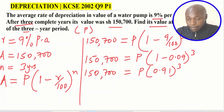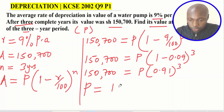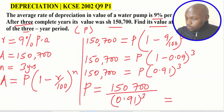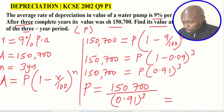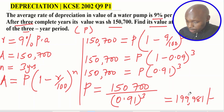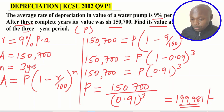To make P the subject of the formula, divide both sides by 0.91 cubed. So P is given by 150,700 divided by 0.91 cubed. Using the calculator to work this out: 150,700 divided by 0.91 cubed gives approximately 199,000 — that is the value at the start of the three-year period. That is how you solve this question.